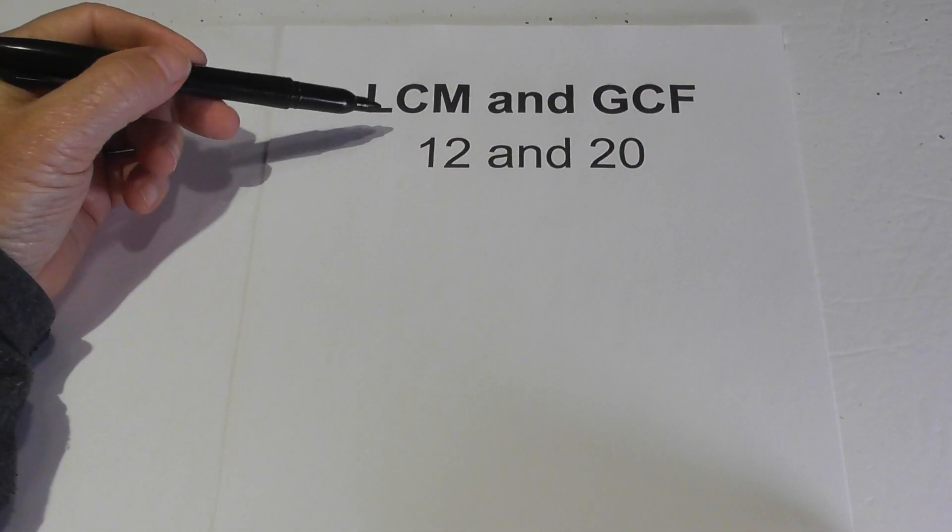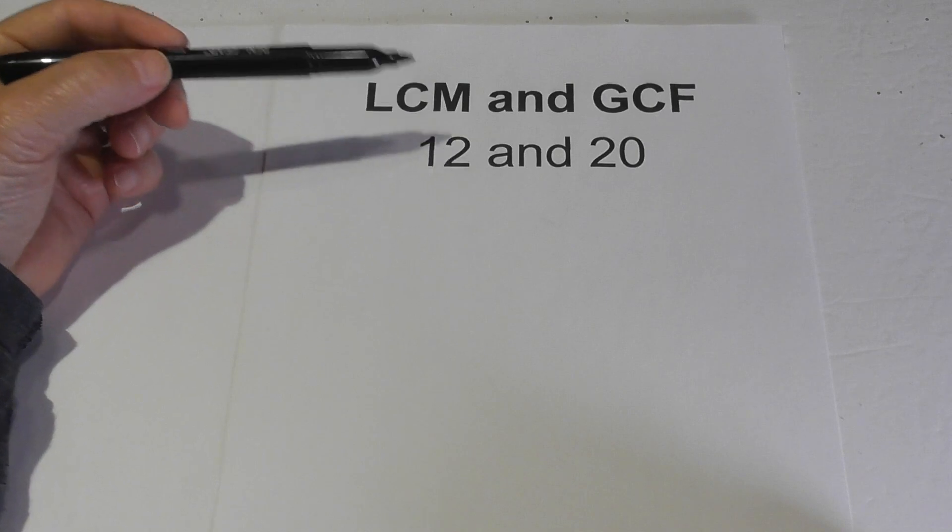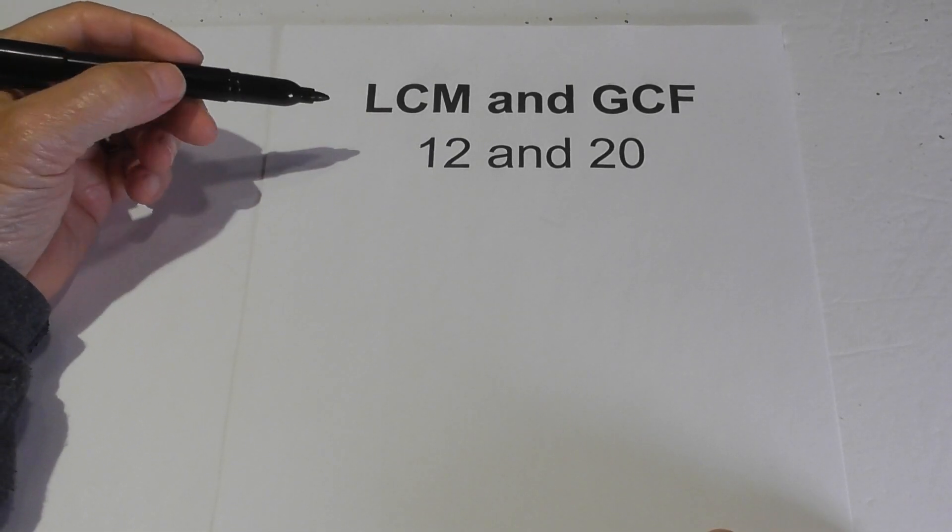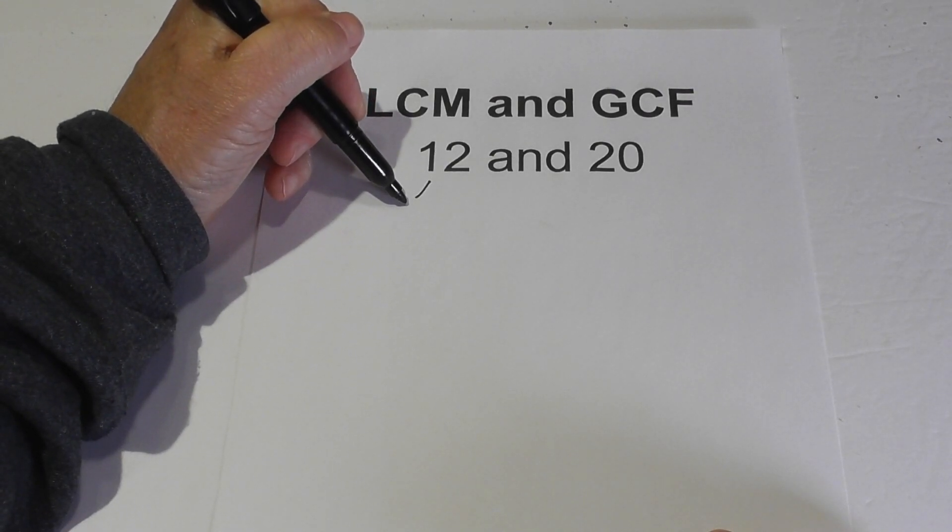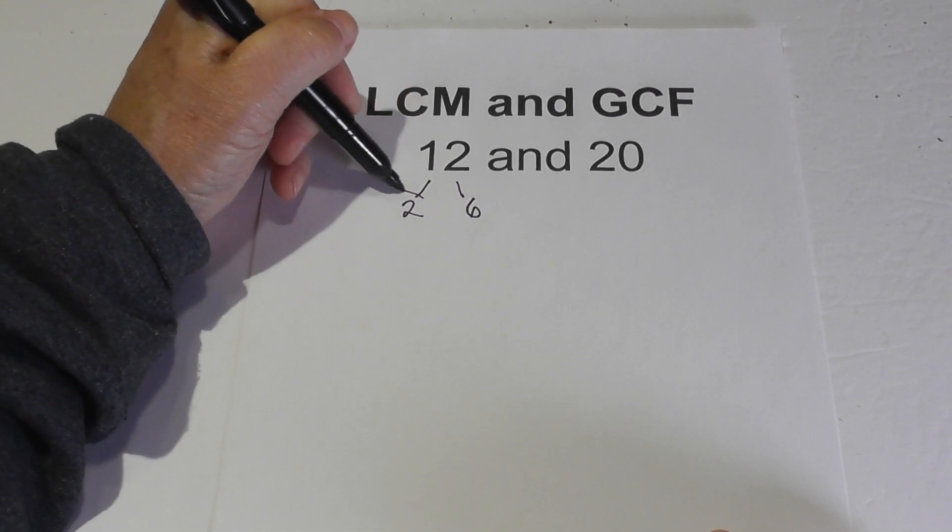Okay, let's go ahead and find the LCM and GCF of 12 and 20. Let's start with the lowest common multiple, and I like to use a factor tree. So let's start factoring. We have 2 times 6. I'm going to circle 2 because it is prime.